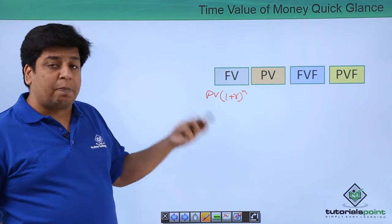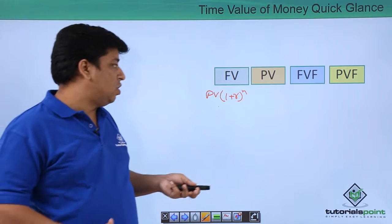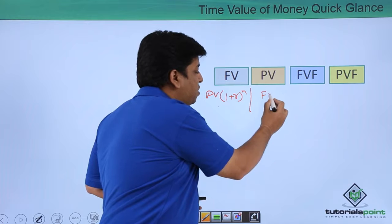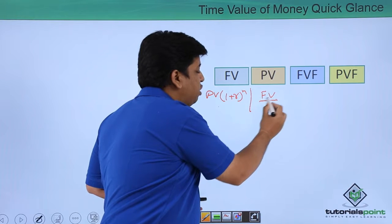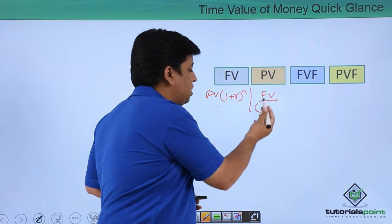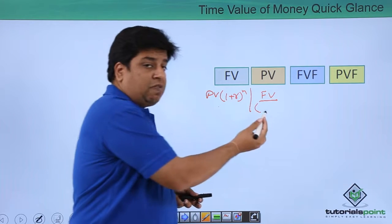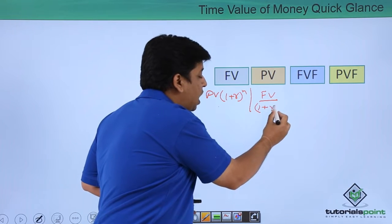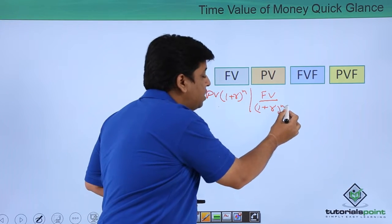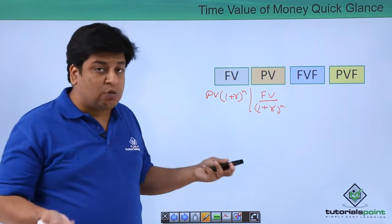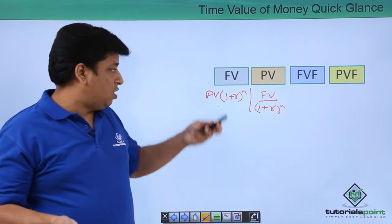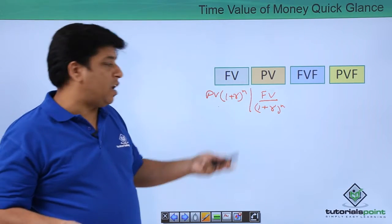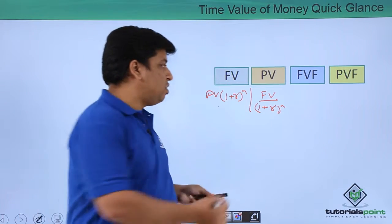Present value is when we try to convert the future value into the present value. You divide the future value by (1 + r)^n. This is how we discount the future value to the present value — it is essentially a discounting methodology.